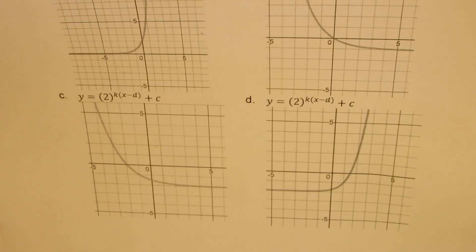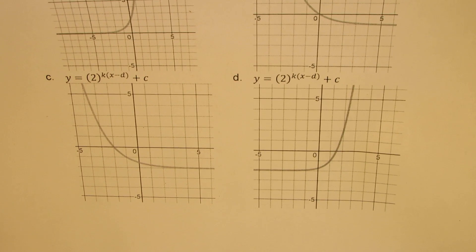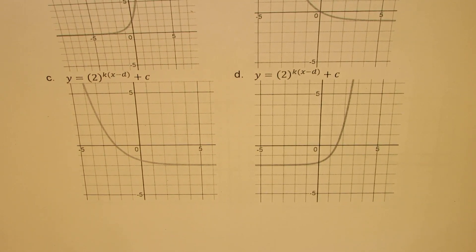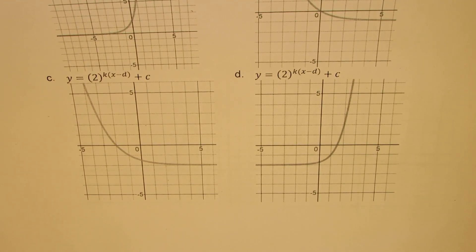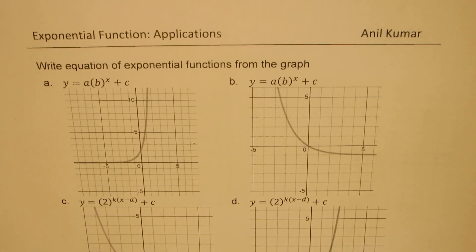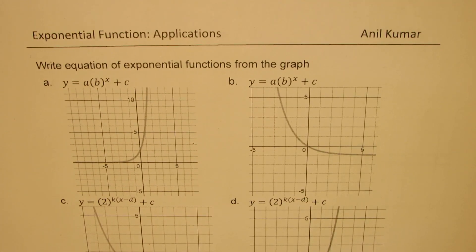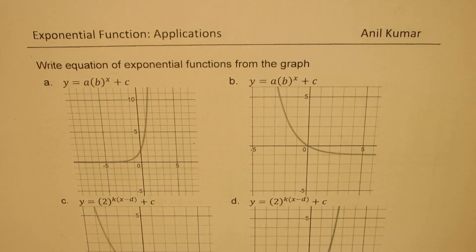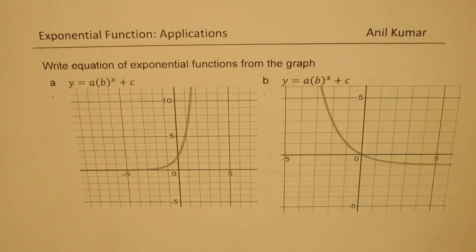Here are graphs of parts C and D. The critical parameters you need to identify are the horizontal asymptotes and the value of the function at x equals 0 and plus or minus 1. That should help you provide the correct equation. Let's see how to do it one by one.